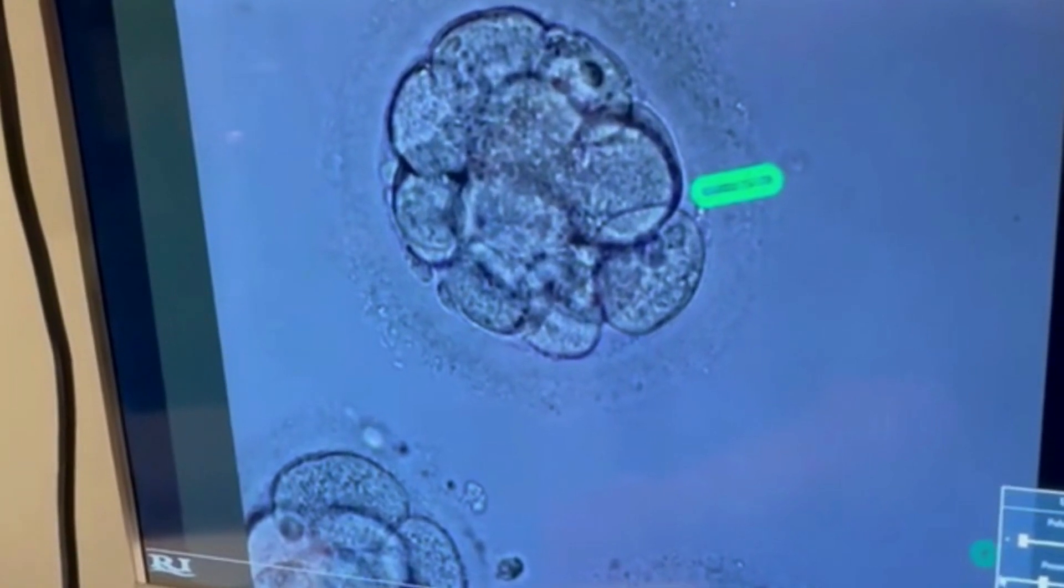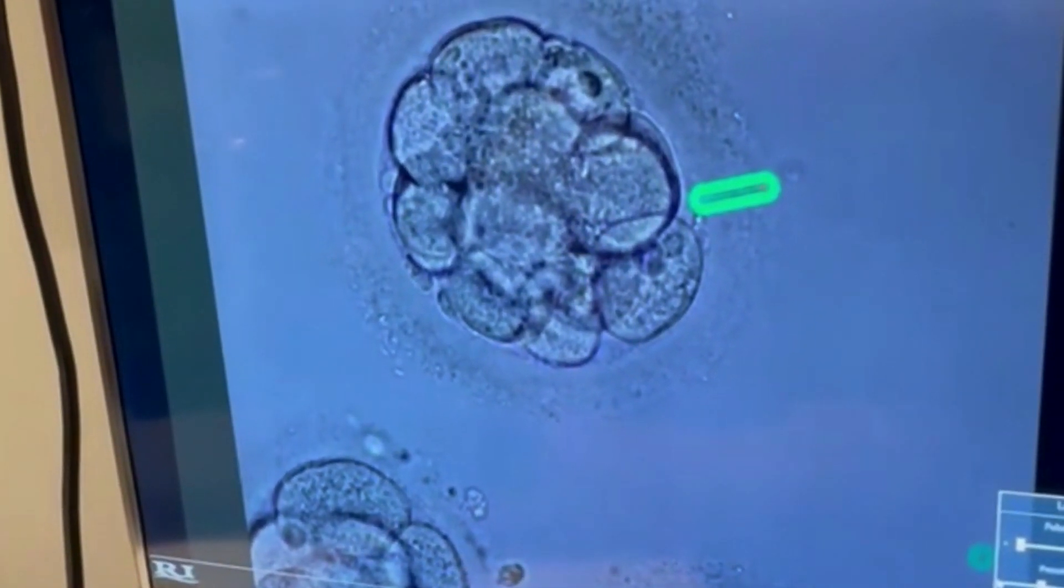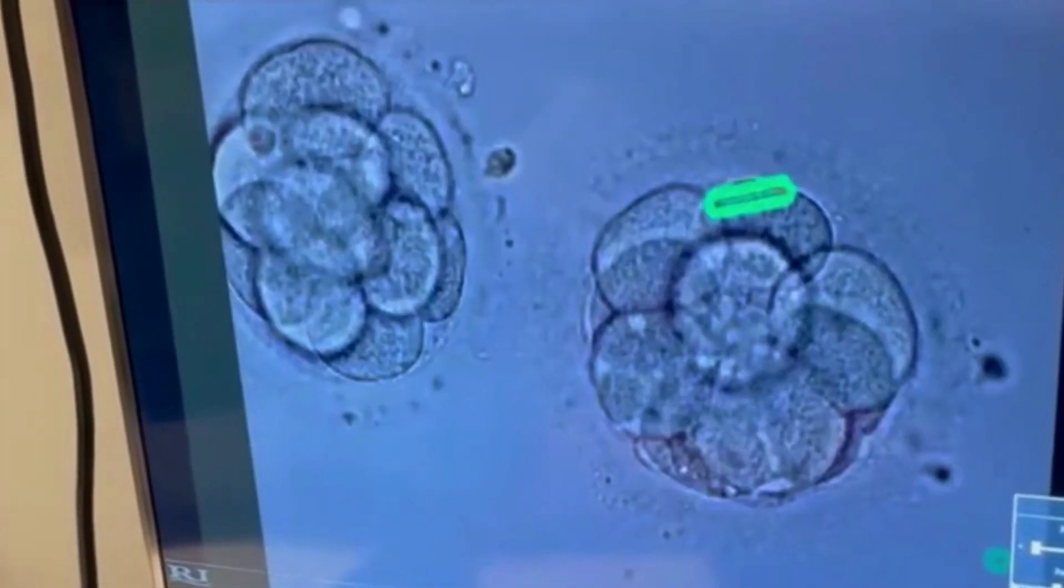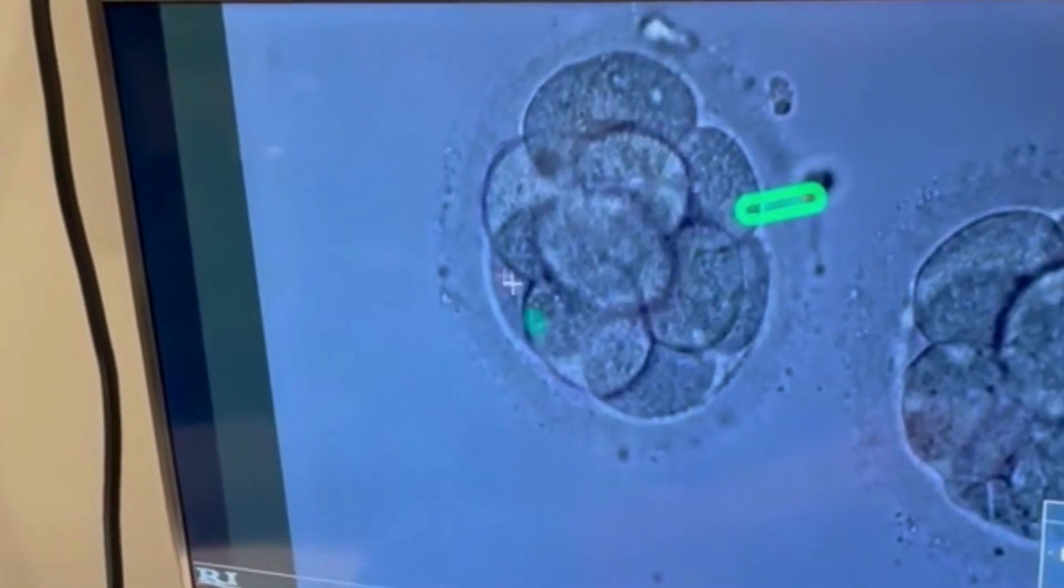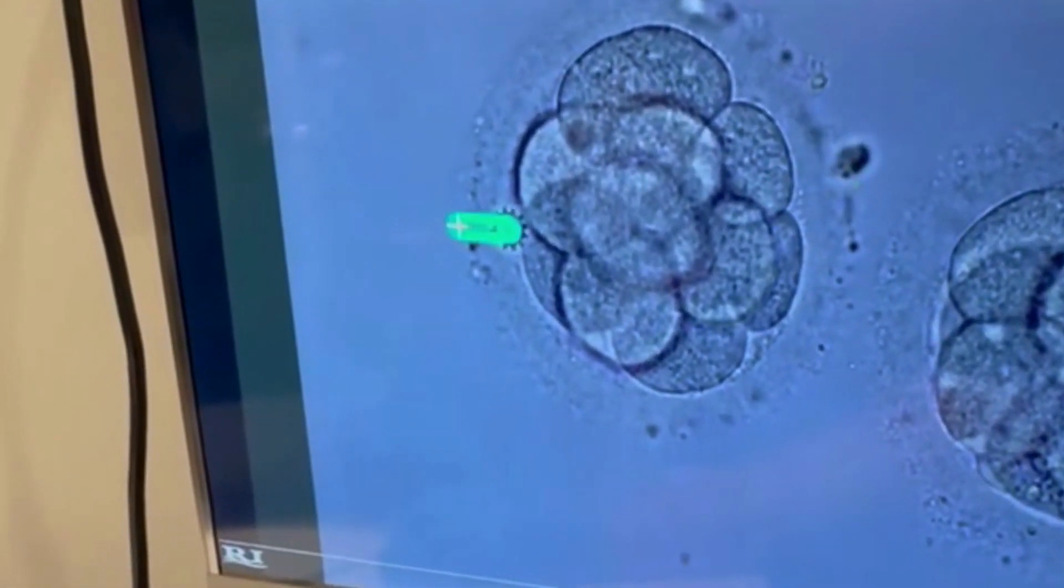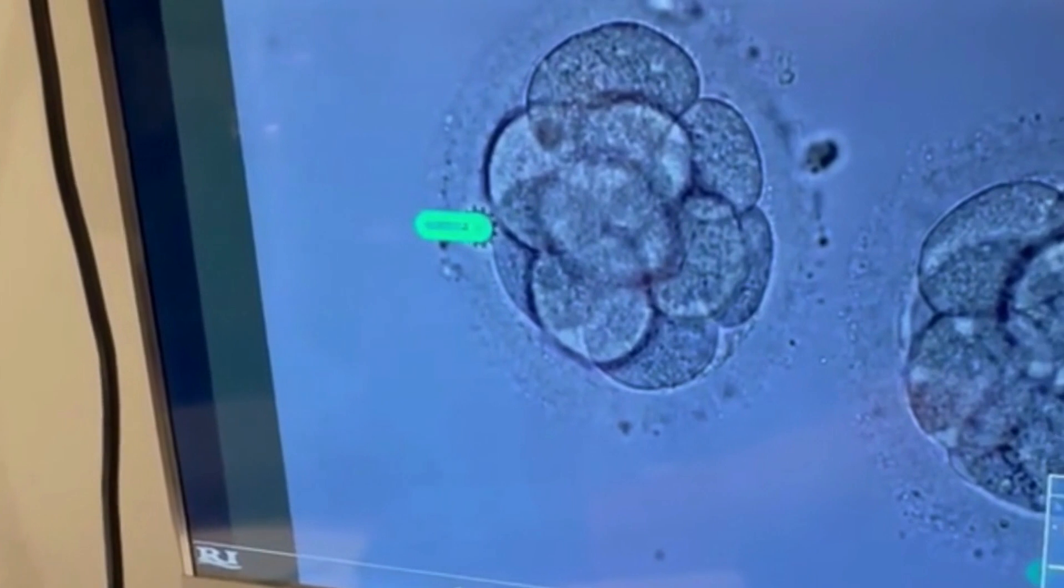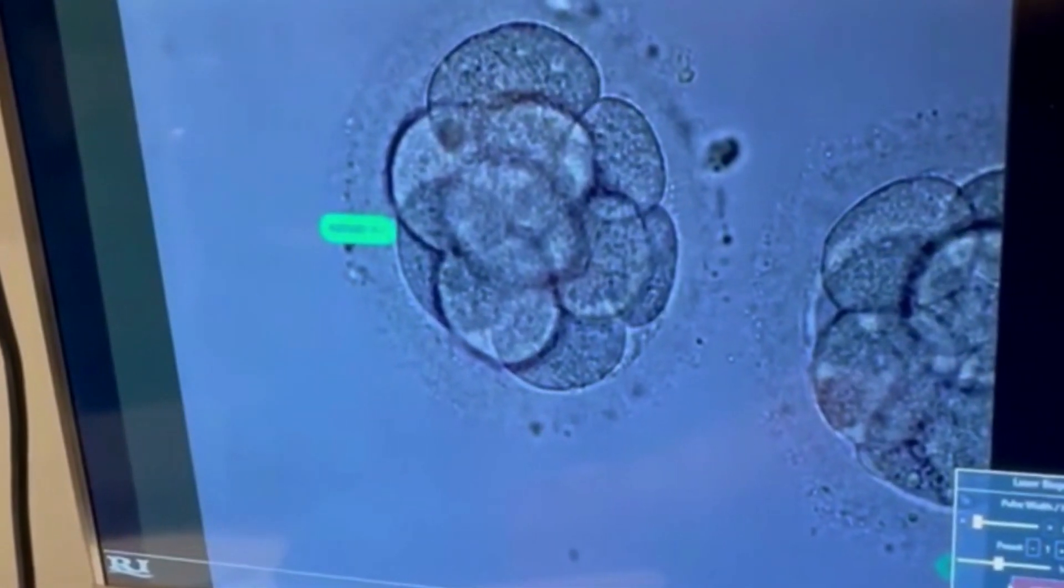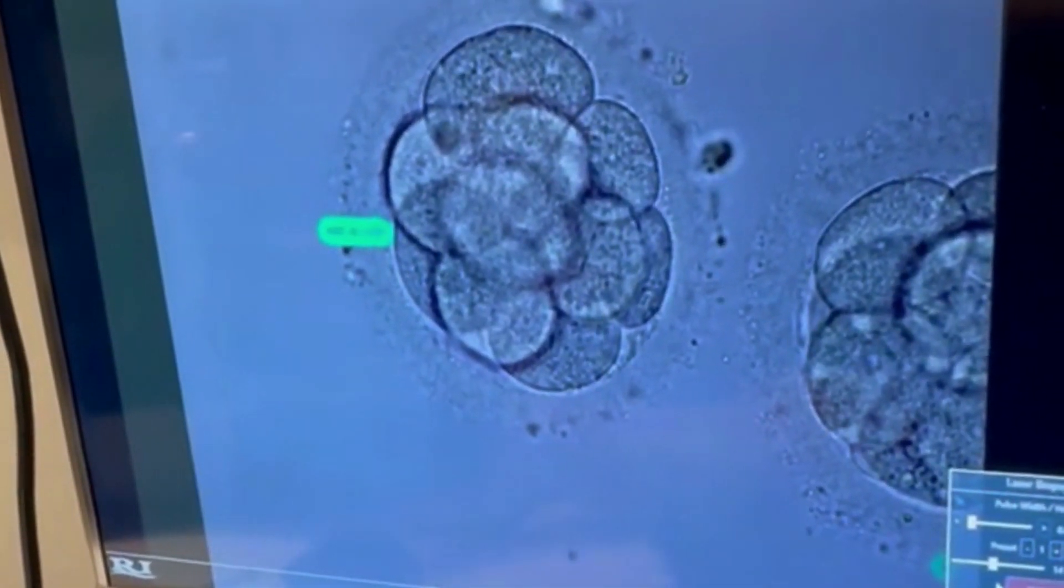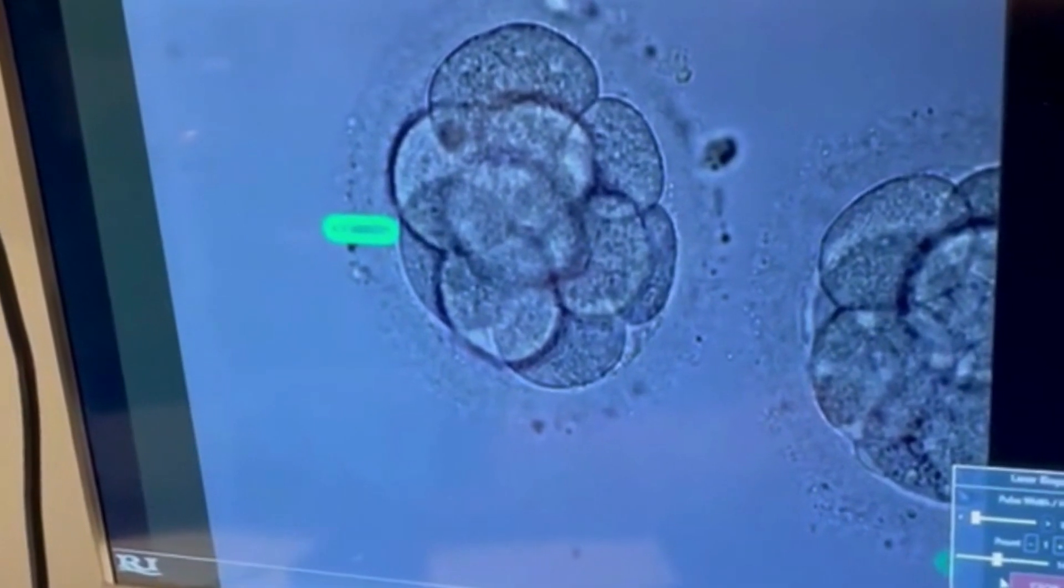If PGT testing is planned, laser assisted hatching is done on day three. So what you see here are three very nice quality day three embryos. At this point, there should be around eight to ten cells and you can see how we hatch them.